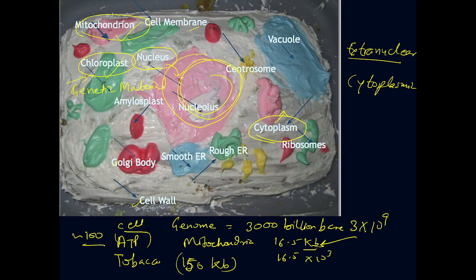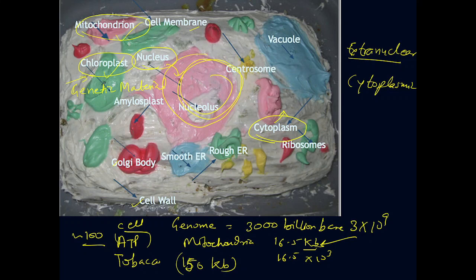You can expect to learn how to solve problems about chloroplast or mitochondrial inheritance in competitive exams. As I mentioned, these patterns of inheritance deviate from the Mendelian pattern. Mendelian inheritance involves transmission of characters or genes via chromosomes from one generation to another, and it relates to the nuclear genome. Extra nuclear inheritance covers mitochondria and chloroplast inheritance.